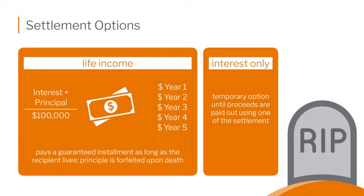Another choice is interest only. This is only a temporary choice. As a beneficiary, if you've been so distraught that you can't make a big financial decision right away, you could ask them to give you an income off of the death benefit — an interest rate of 6%, 7%, whatever you work out with the insurance company — just temporarily for a few months until things settle down. Then you can make a permanent decision after that.